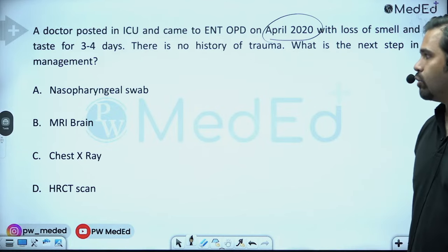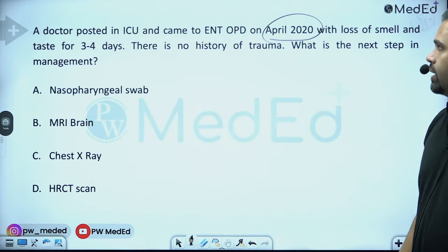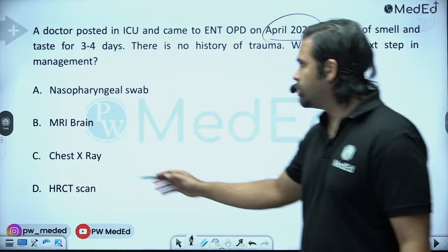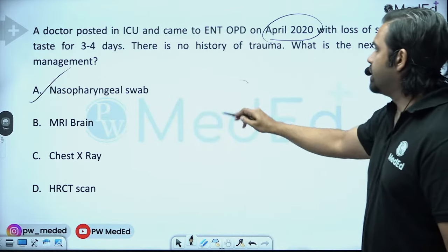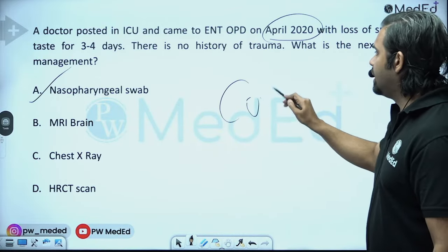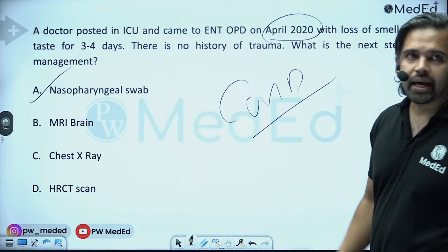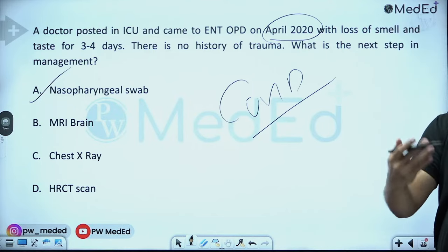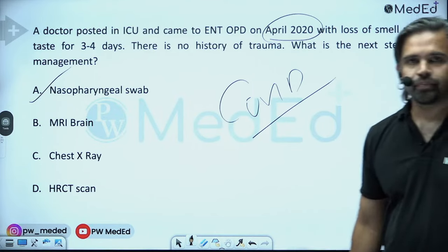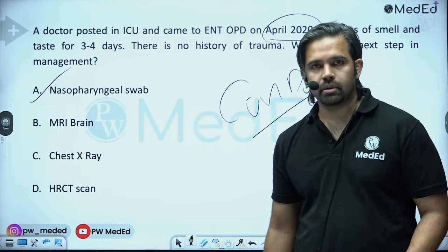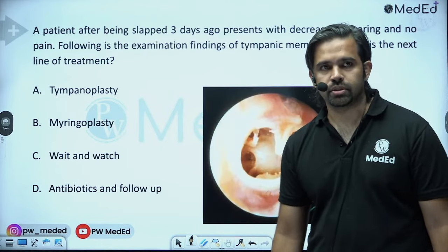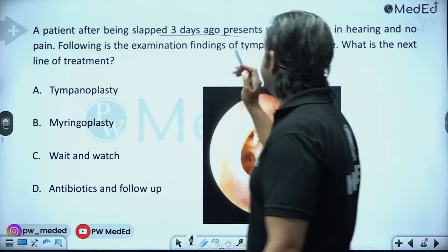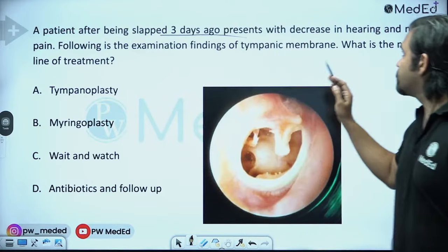A doctor in the ICU in April 2020 with loss of smell — this is COVID-19. The next step would be a nasopharyngeal swab for RT-PCR. FMG may ask a COVID-related ENT question.